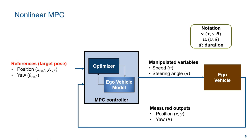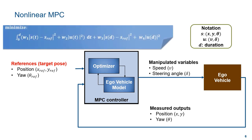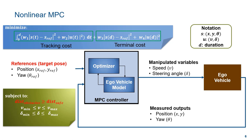We use nonlinear MPC to solve this problem. Here is the standard structure for the MPC controller. In this example, the manipulated variables are speed and steering angle. The outputs from the ego vehicle model are the position x, y and the heading angle theta. Inside the MPC controller, the ego vehicle model is the kinematic bicycle model, and the optimizer uses a quadratic cost function which is a combination of tracking cost and terminal cost. Most importantly, the solution must satisfy the constraints, where the distances to obstacles must be above a safe distance — a parameter we can set — and the two manipulated variables are bounded.